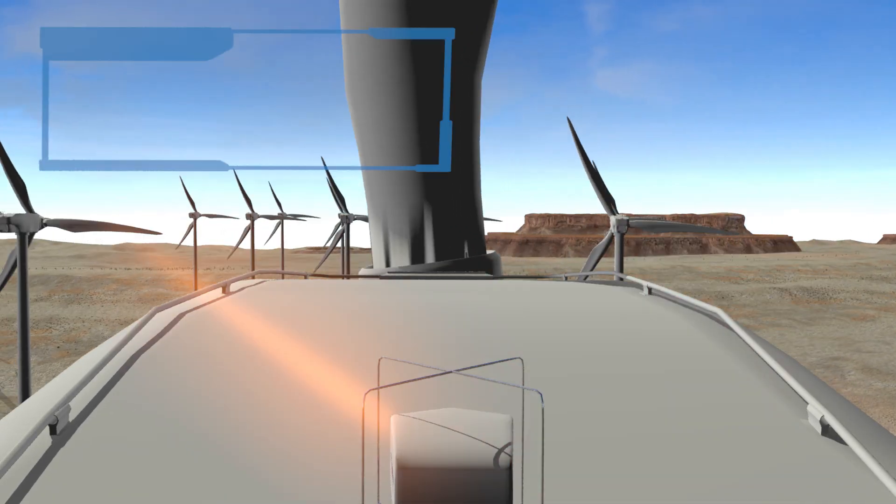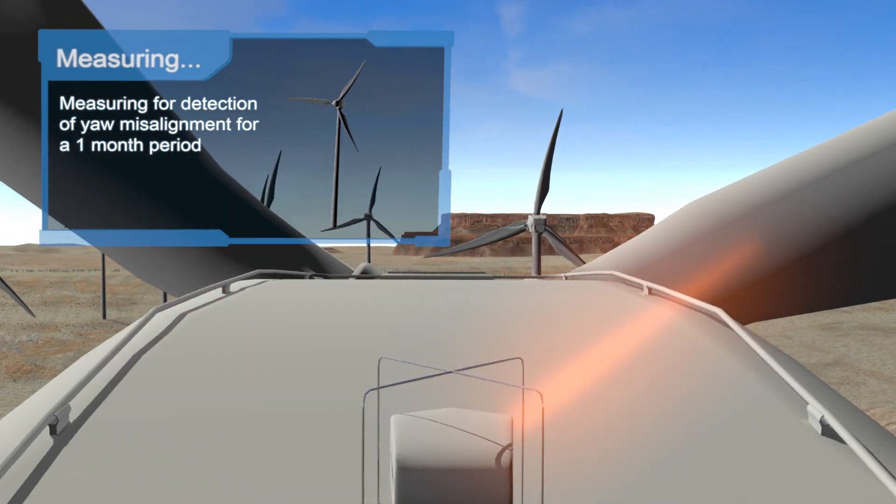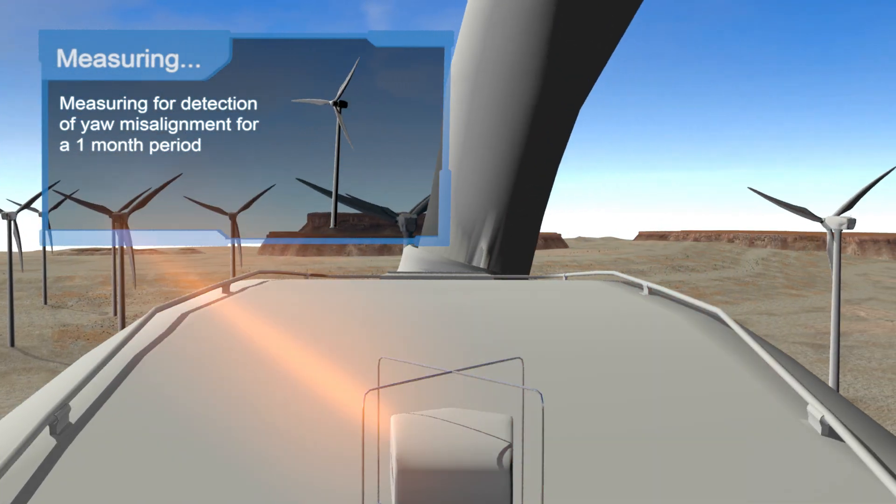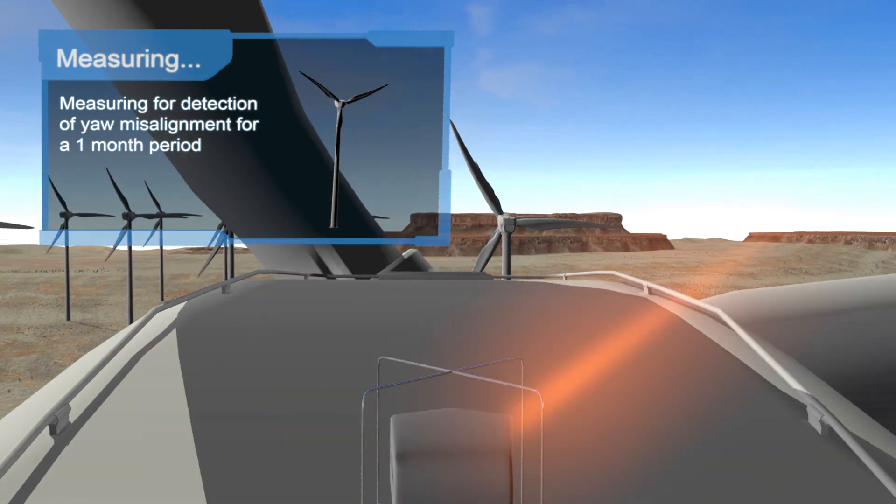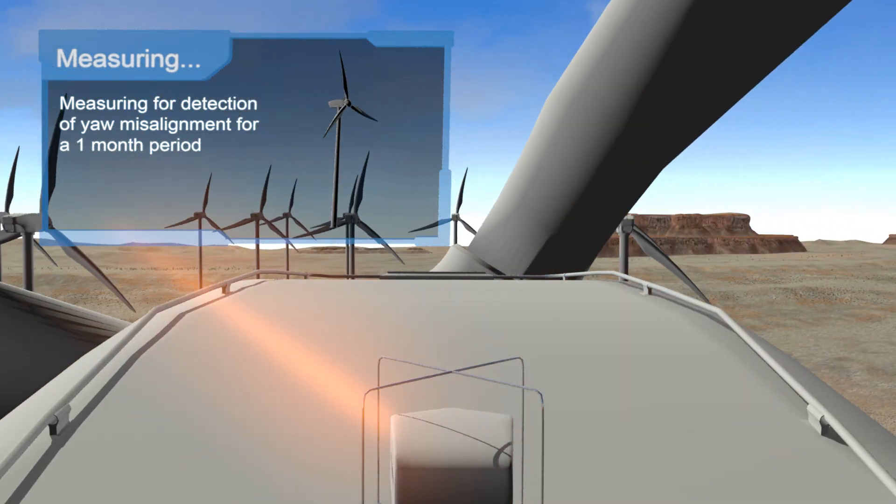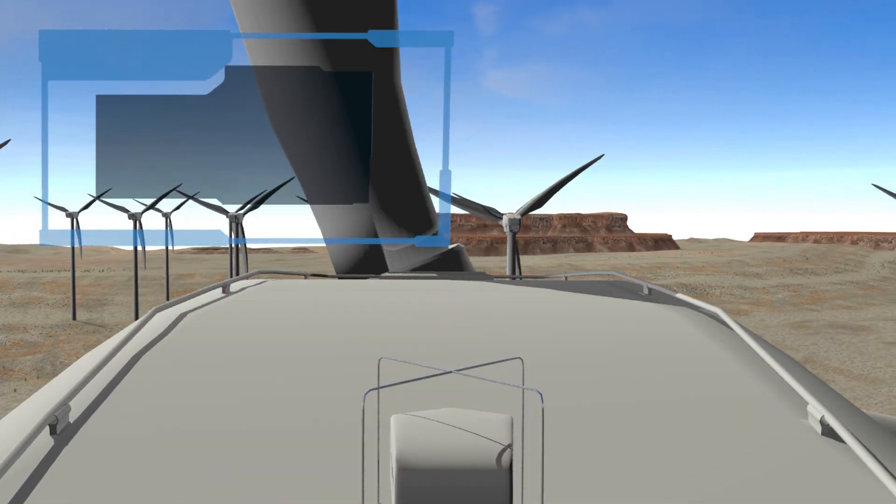Software algorithms then calculate the oncoming wind speed and direction relative to the turbine direction, which gives the wind turbine controller ample time to adjust before the wind reaches the turbine.